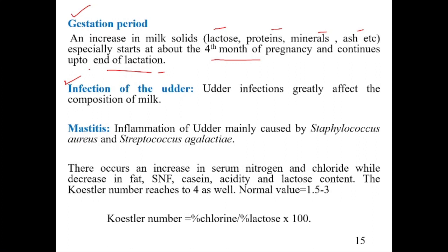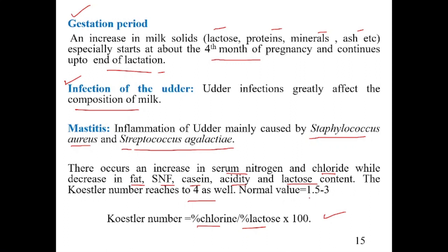Infection, mainly mastitis, greatly affects milk composition. Mastitis is inflammation of the udder, mainly caused by Staphylococcus aureus and Streptococcus agalactiae. During mastitis, there is an increase in serum nitrogen and chloride content, and a significant decrease in fat, SNF, casein, acidity, and lactose content.